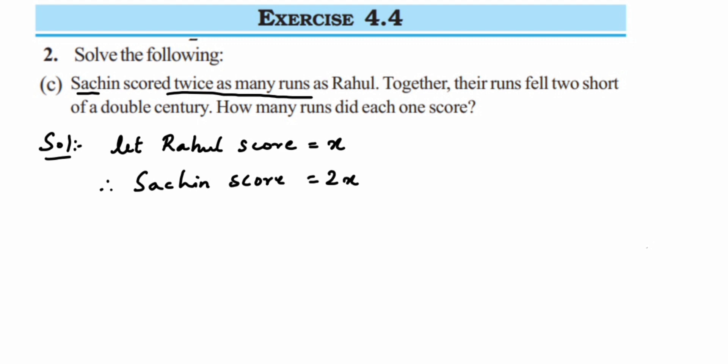Now the next relation we have given is: together their runs fell two short of a double century. Double century means 200 runs, so two short means two less than the double century, which will give you 198. So we can say that the sum of Rahul's score and Sachin's score is equal to 198. So that's a simple equation we have got. We can write down: Rahul's score plus Sachin's score is equal to 198.